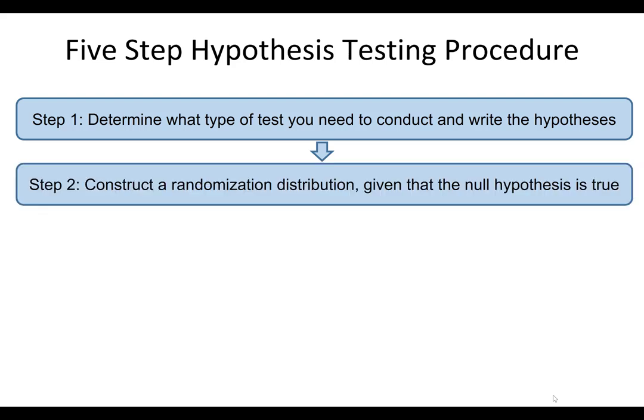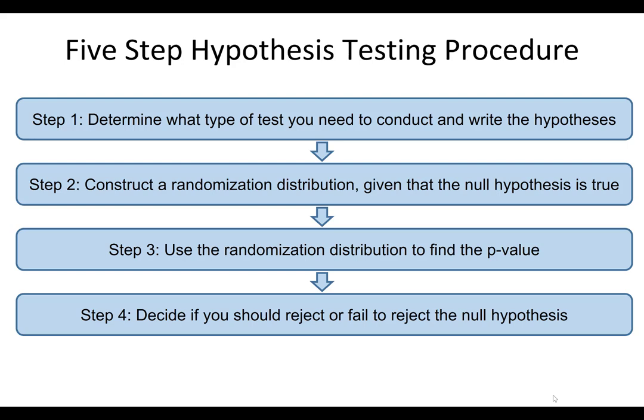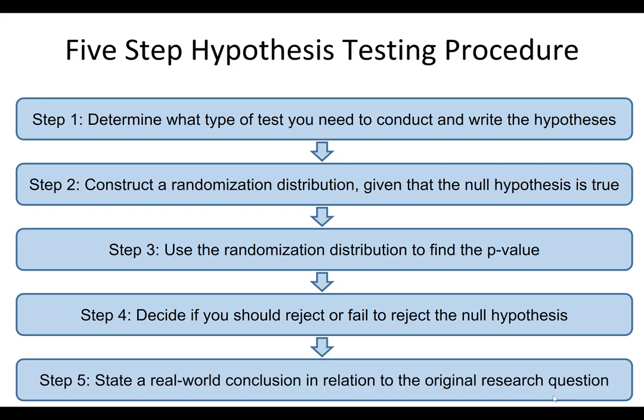The second step is to construct a randomization distribution given that the null hypothesis is true. A randomization distribution is very similar to the bootstrap distributions from last week. The main difference is that with hypothesis testing, we have a hypothesized population parameter, so we can use that as the center of our sampling distribution. The third step is to use the randomization distribution to find the p-value. The fourth step is to decide if you should reject or fail to reject the null hypothesis. And the last step is to state a real-world conclusion in relation to the original research question.